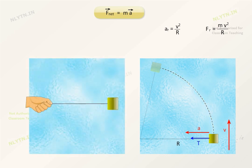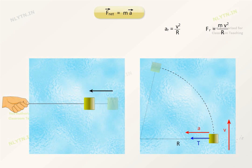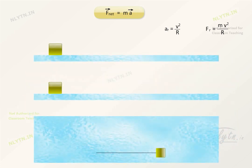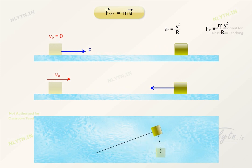Instead, if the particle was at rest and we started to pull it in a direction, then its motion would be a straight line in the direction of force. So the difference is due to the fact that at the initial instant, how the initial velocity and the force are oriented with respect to each other. Depending on this orientation, the motion of the particle may or may not be in the direction of force.